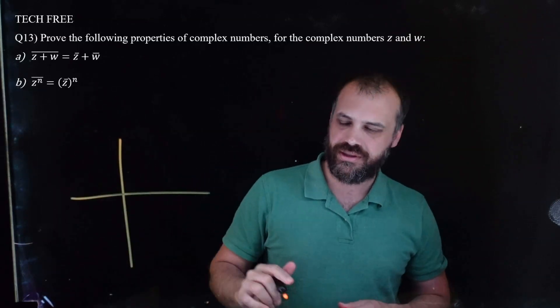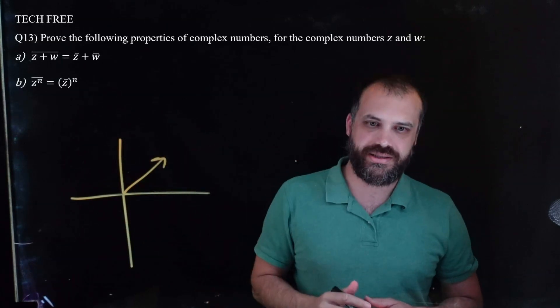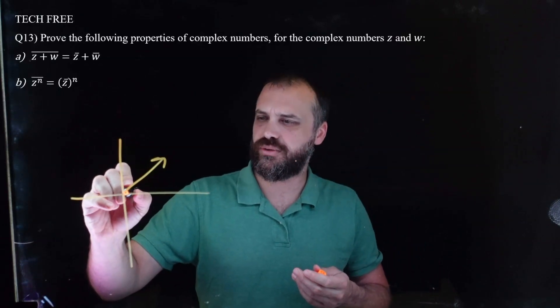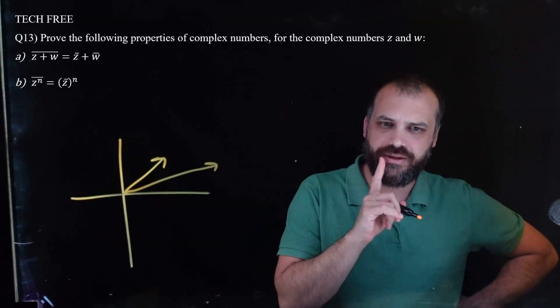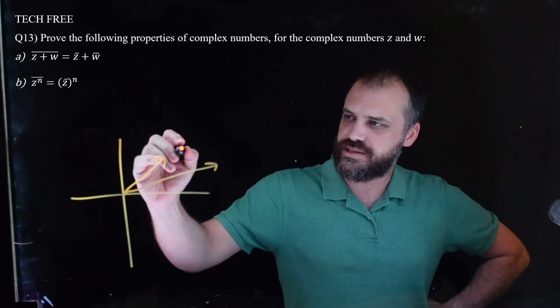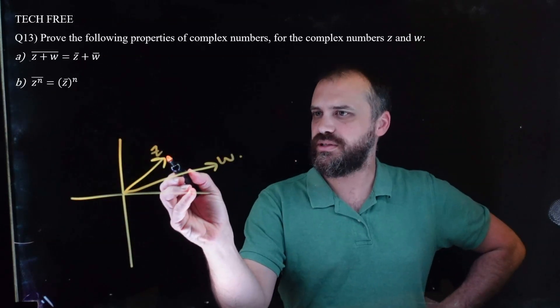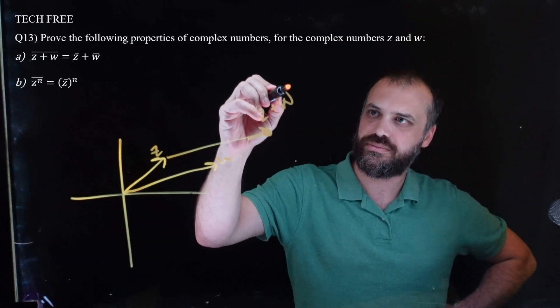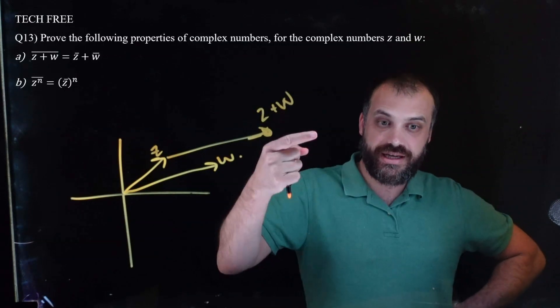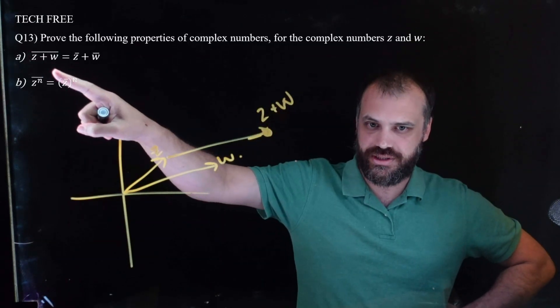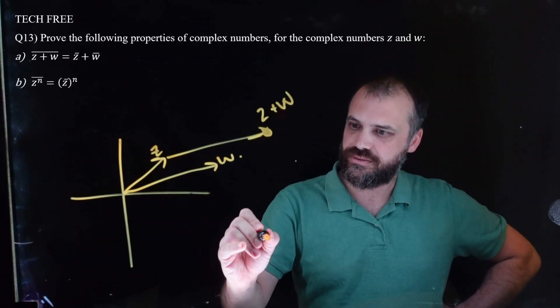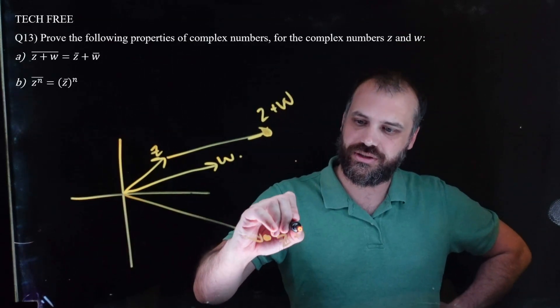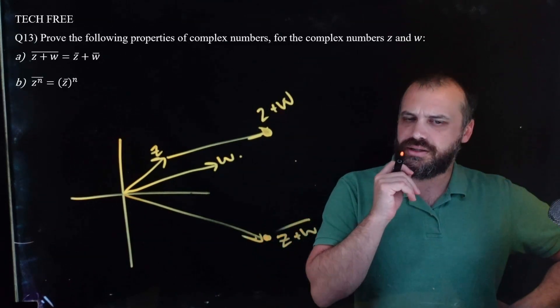Before I start, I want to draw a picture because what I want to do is get an intuitive understanding of what this means. Alright. Some of you are not going to love this. This is my complex number Z on an Argand diagram. I'll make like a W. Alright. Let's make it, let's not overcomplicate things. Let's make W look like that. Alright. Now, if I do Z plus W, Z plus W, I'll get something that looks like that. This point is Z plus W.